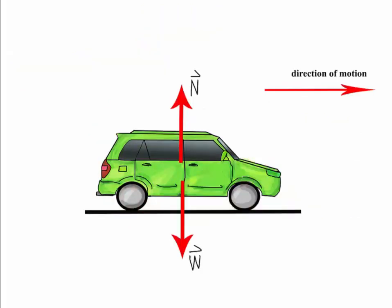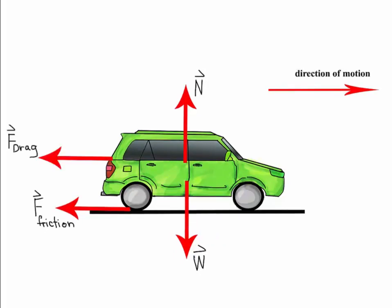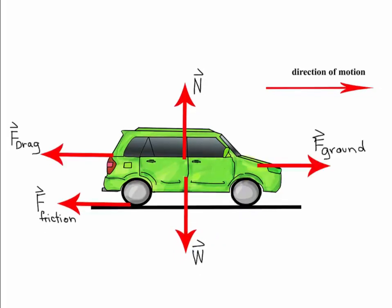For any problem, we need to first draw a free body diagram and define our forces. So here, we have the direction of motion, the normal force, and the weight. We have friction, the drag force, and we have F ground, which is the propelling force by the ground. This is the propulsion force that the ground exerts on the tires.